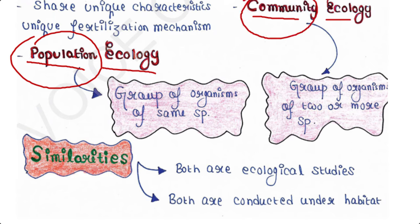A community is a group of populations of two or more different species interacting together in the same geographical area at the same time.